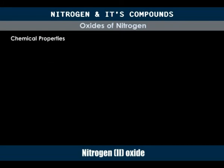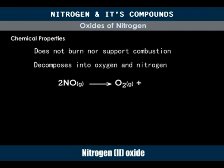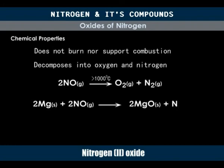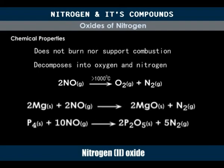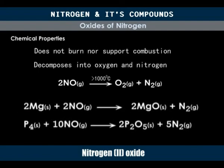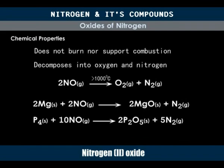Chemically, nitrogen-2 oxide does not burn nor support combustion. However, it decomposes to nitrogen and oxygen at temperatures above 1,000 degrees Celsius. The oxygen so formed will support the combustion of burning substances. Therefore, nitrogen-2 oxide will support the combustion of fiercely burning substances like magnesium and phosphorus, which produce heat over 1,000 degrees Celsius. It will, however, extinguish a burning wooden splint and sulfur, both of which are not hot enough to cause its decomposition.